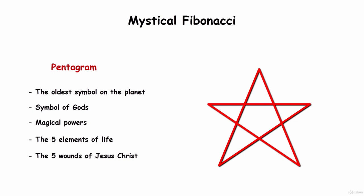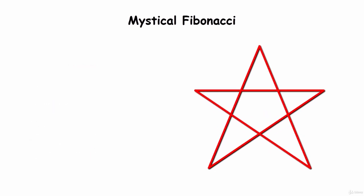What I would like to talk about is the mathematical basis of the pentagram and its similarities to Fibonacci ratios. In the structure of the pentagram, there are five intersected lines. Pay attention to the first line — we do not know its length, but it's not important, so we shall mark the beginning of the line as zero and the end of it as one.